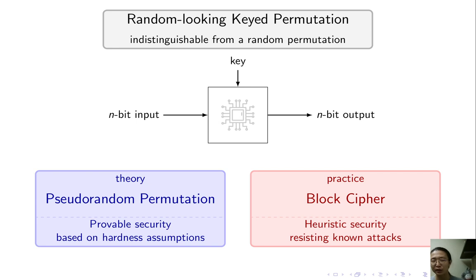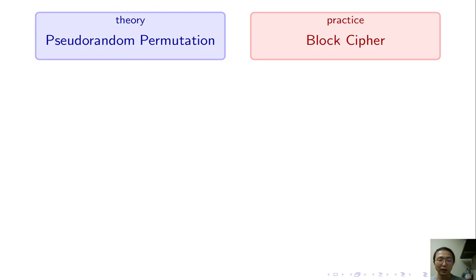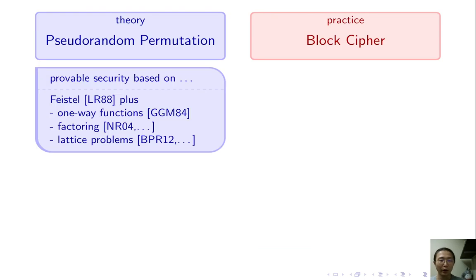I am not saying the theory work don't care about efficiency or the practical work don't care about proof. Just as we all know, this gap exists, and it seems very hard to bridge it. In the literature, we already have provably secure PRP based on one-way function, factoring, or lattice problems. Unfortunately, none of them is fast enough to be practical.